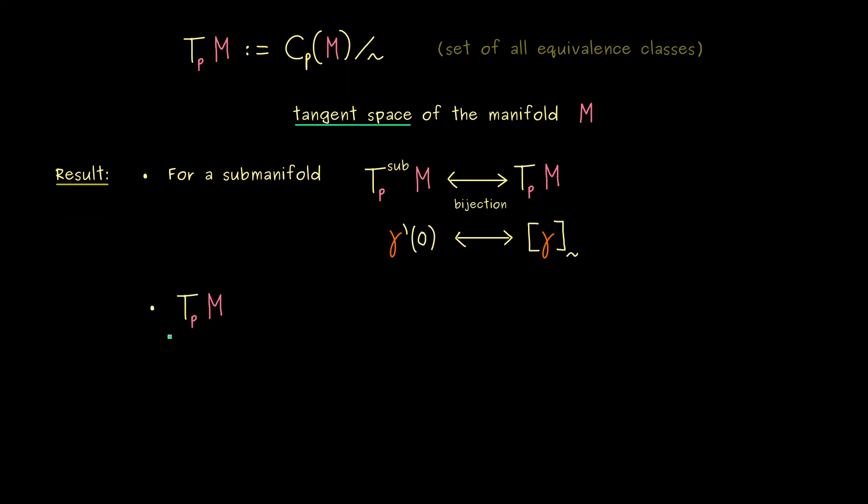Okay, now one crucial fact is still missing here, because we want that this new tangent space is also a vector space. For the submanifolds, this one was a subspace in R^n, but now what about the new tangent space here? Of course, it is also a vector space, but we have to talk about the operations in it. So what we need is an addition and a scalar multiplication. Indeed, for being a vector space, we need to know how to add vectors and how to scale them. So exactly these two operations have to be well defined.